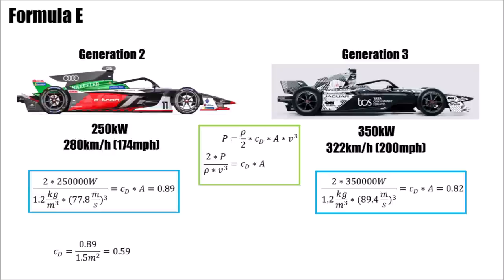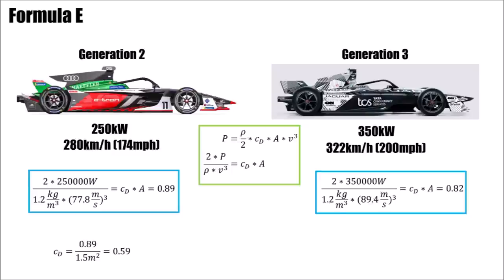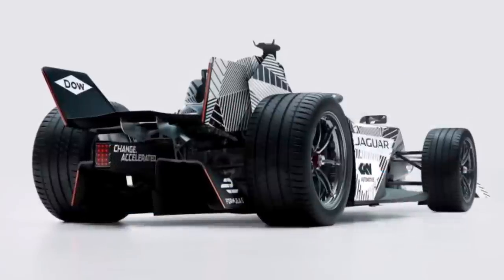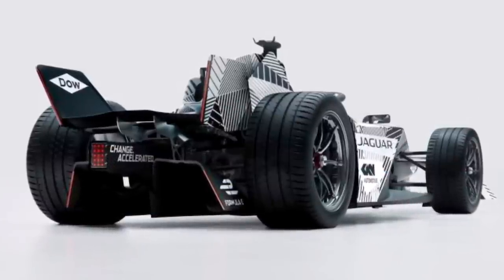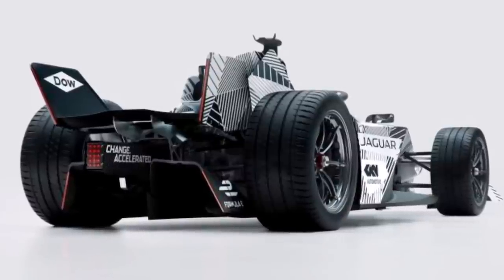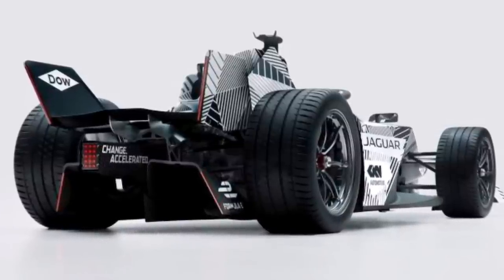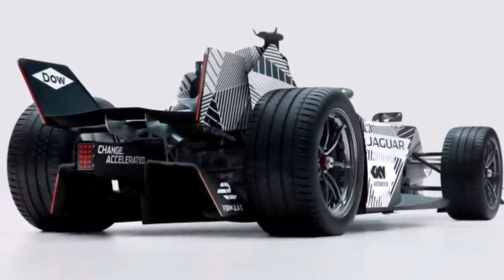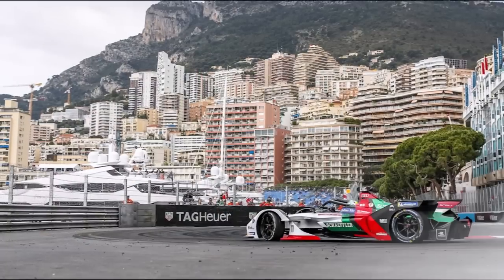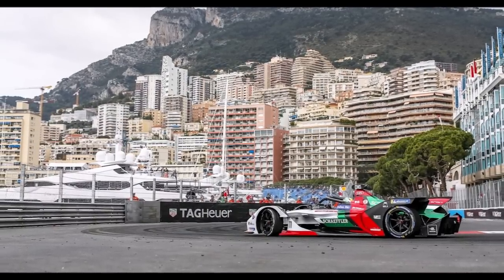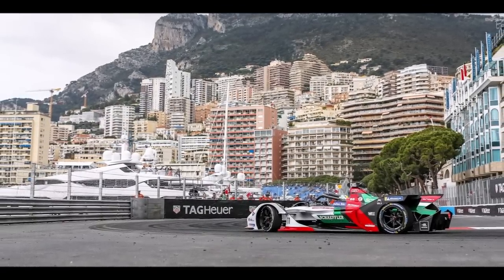CD times A for Generation 3 is now very similar but slightly lower, which makes sense because the car is now 40mm narrower, 100mm lower, and almost 200mm shorter. So the frontal area is smaller. At the same time there is a very low rear wing which reduces drag, but the front wheels are not covered anymore which increases drag again. In summary, the frontal area is smaller and the drag coefficient is about the same as before.